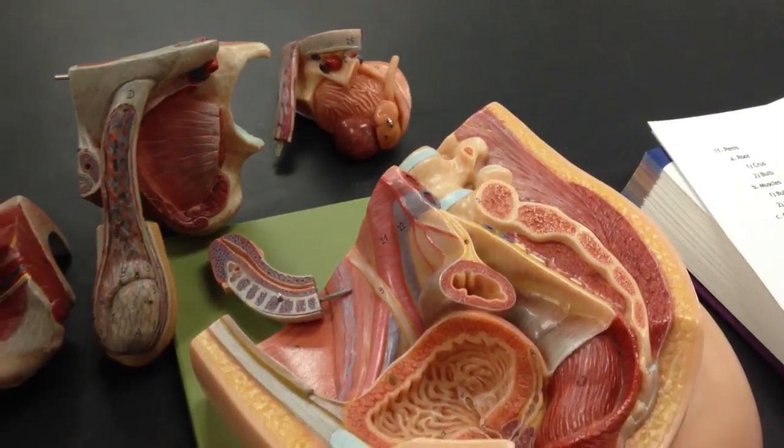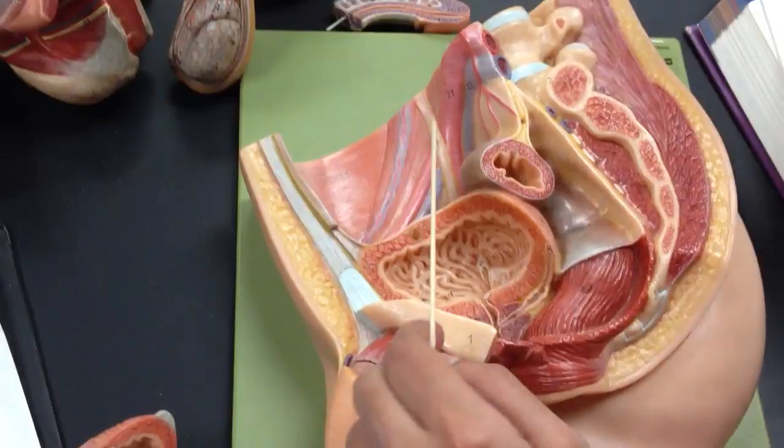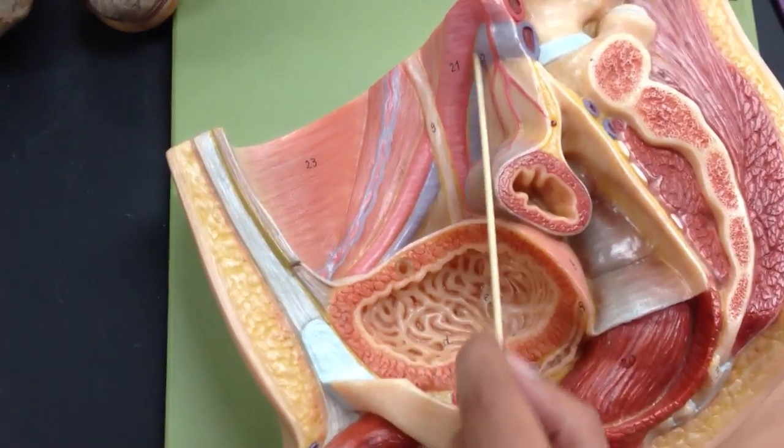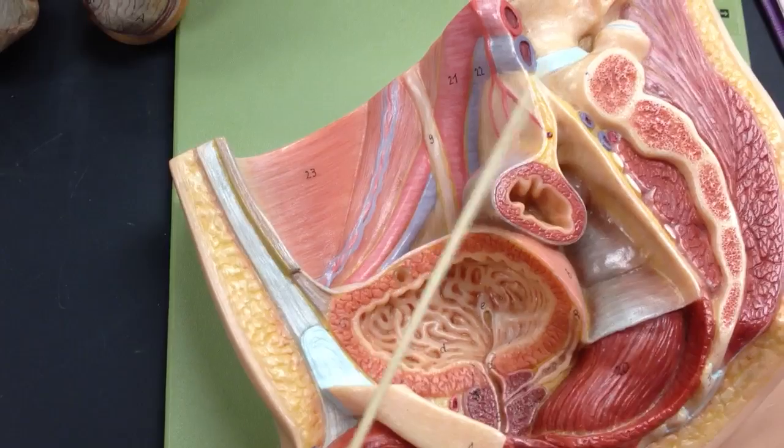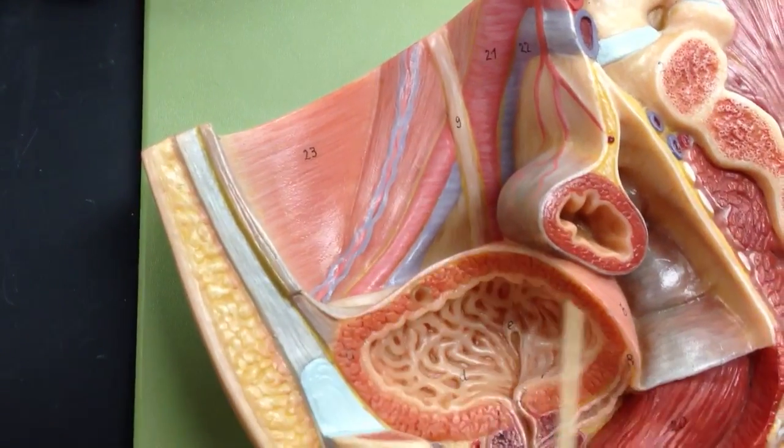Blood vessels: you have the testicular artery and vein, common iliac artery and vein, external iliac artery and vein, and internal iliac artery and vein.